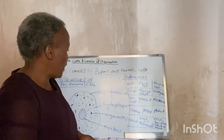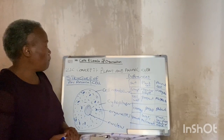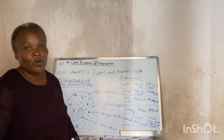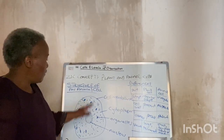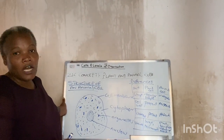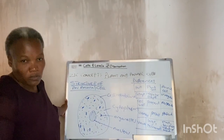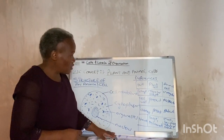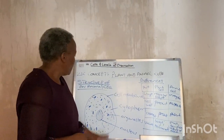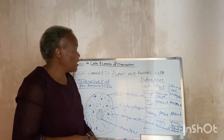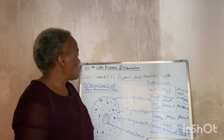We've come to the end of our topic on plant and animal cells. Remember to click the subscribe button, then download the material if you find it beneficial. Please also share with friends and colleagues. We'll meet again in the next section as we continue with our main topic, cells and levels of organization.